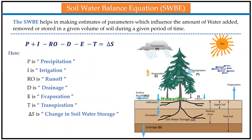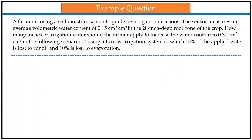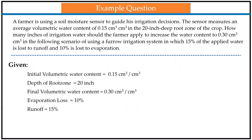So, precipitation and irrigation are the ones that add water to the soil, while runoff, drainage, evaporation, and transpiration are the factors responsible for a decrease in soil water. Moving ahead, here is an example question in which the soil water balance equation is used. A farmer is using soil moisture sensors to guide his irrigation decisions — he has to decide how much irrigation to give to his field. The given parameters are the initial volumetric water content, depth of the root zone, and final volumetric water content.